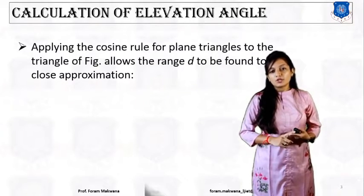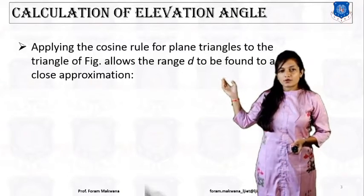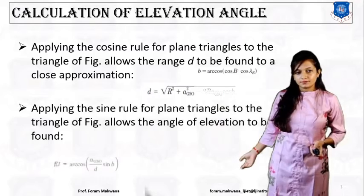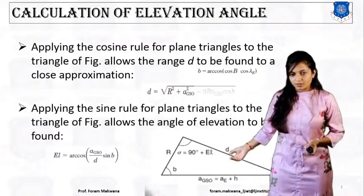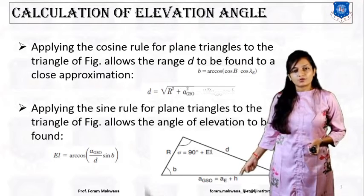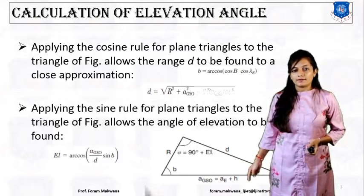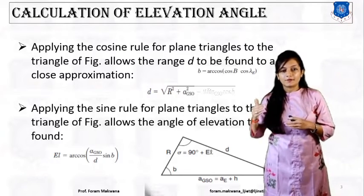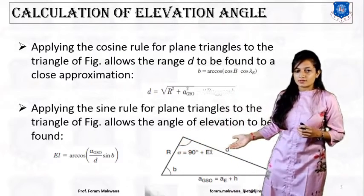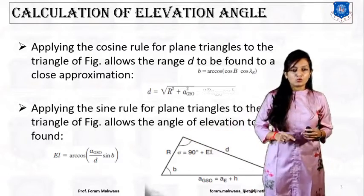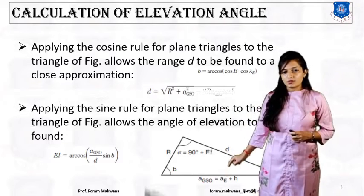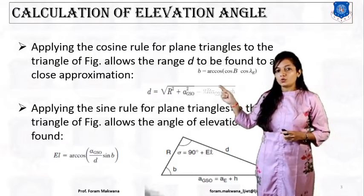From the calculation of the azimuth angle, we apply the cosine rule for the plane triangle to the triangle shown in the figure. A_GSO stands for the radius of geostationary orbit, A_E stands for radius of earth, H means the height at which the satellite is located from the surface of the earth. Capital R is also the radius of earth, and there is the distance D. We apply the cosine rule for this plane triangle, which allows the range D to be found via close approximation.